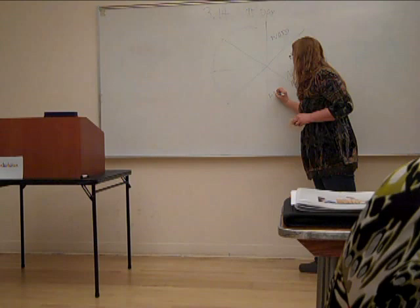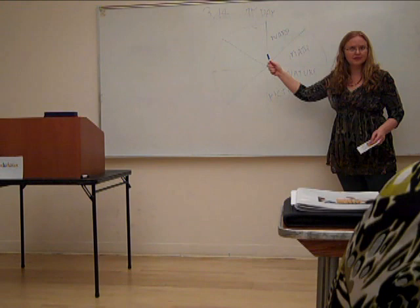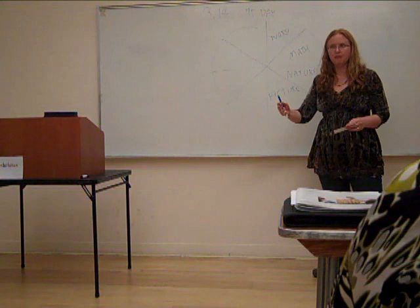The next type is visual spatial, otherwise known as picture smart. These people learn best through pictures, pictures like photographs or charts like this, diagrams. They think in three dimensions. They don't get lost if they have a map.